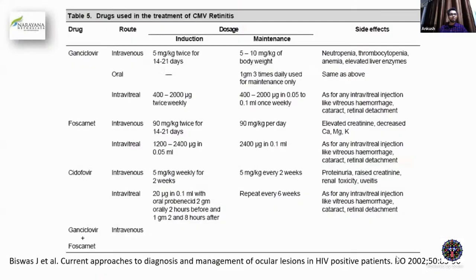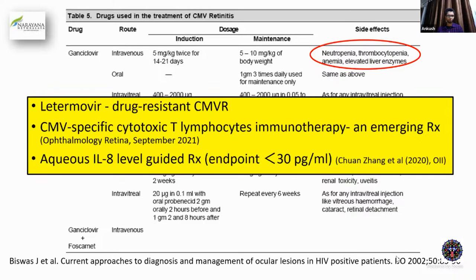A table describes the treatment for CMV retinitis — it will be in your textbooks. I'd like to highlight that in contrast to valacyclovir, ganciclovir can cause neutropenia, thrombocytopenia, and anemia. So apart from LFT and KFT, do monitor at least CBC. Among newer drugs, letermovir to treat drug-resistant CMV retinitis. There is a recent publication on CMV-specific cytotoxic T-lymphocyte immunotherapy for CMV retinitis. There was also another interesting publication in which authors recommended monitoring interleukin-8 levels in the AC tap to decide when to stop antiviral treatment — if IL-8 is less than 30, we can consider stopping ganciclovir therapy for CMV retinitis in HIV patients.